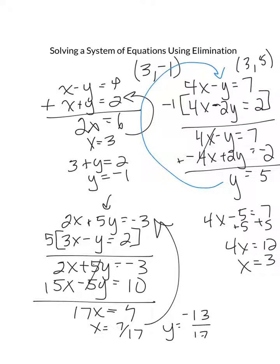So the final answer is 7 seventeenths, negative 13 seventeenths.